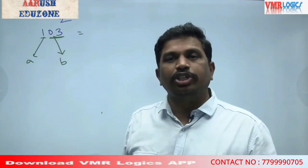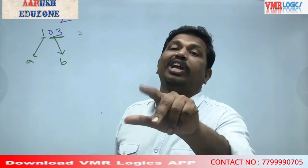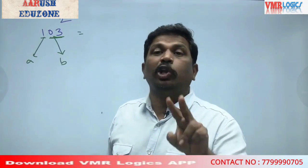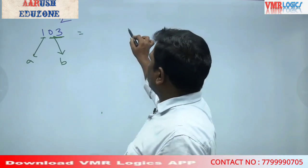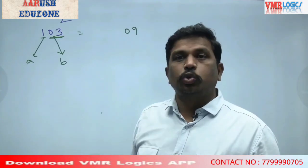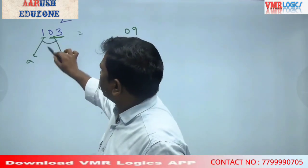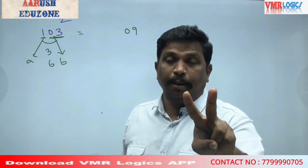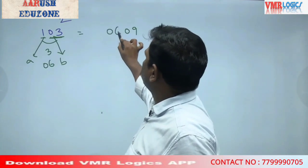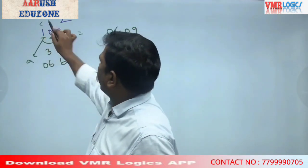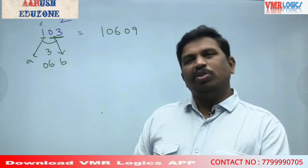B square: 3 squared = 09 — two digits, write 09. Then 2AB: A is 1, B is 3 — 1 into 3 double = 6, write 06. Then A square: 1 squared = 1. So 103 squared = 10609.